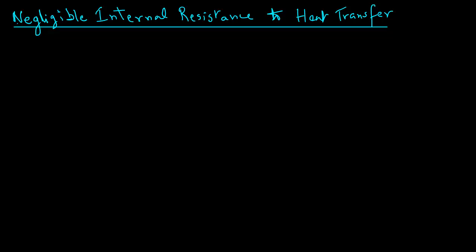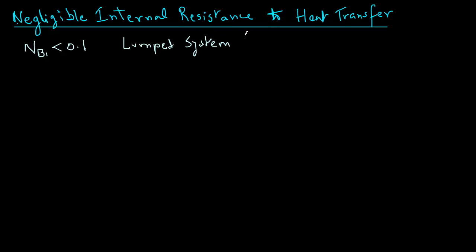Let's consider the case where there is negligible internal resistance to heat transfer, that is, the Biot number is less than 0.1. This type of analysis is also called lumped system analysis. It is called lumped system because we assume that there is no temperature gradient within the object — that heat transfers so rapidly inside the solid object that there is no temperature variation. Temperature only changes with time.